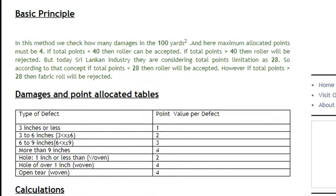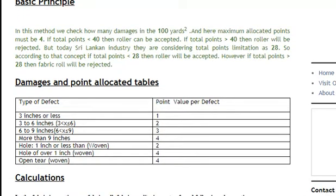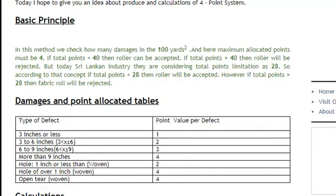Basic principle: In this method, we check how many damages exist per 100 square yards. The maximum allocated points must be four. If the total points are greater than 40, then the roll will be rejected. If the total points are lower than 40, then the roll can be accepted.